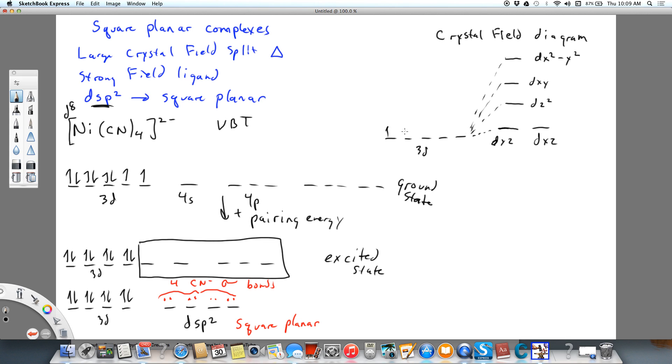So here we have our 8d electrons, and how do they go onto these orbitals? So what we have is, because we have a large split, we're going to have pairing. So here we have the fact that the crystal field splitting energy is greater than the pairing energy.